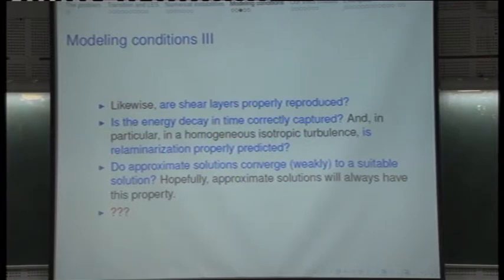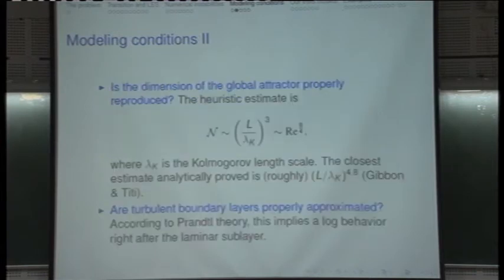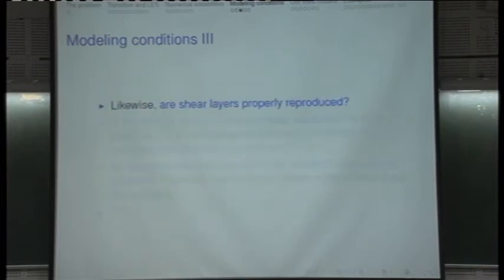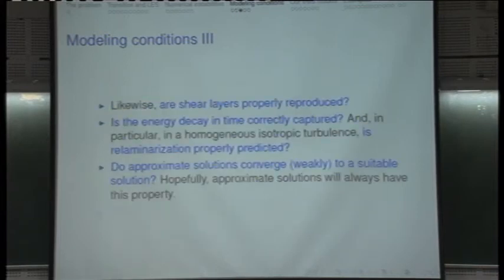So what is the message of this list of points? There are eight points on three slides. The message is that there are characteristic features of turbulence that have to be reproduced if you claim to have a turbulence model. This is a checklist that you have to answer. We have answered most of these questions, but not all of them.